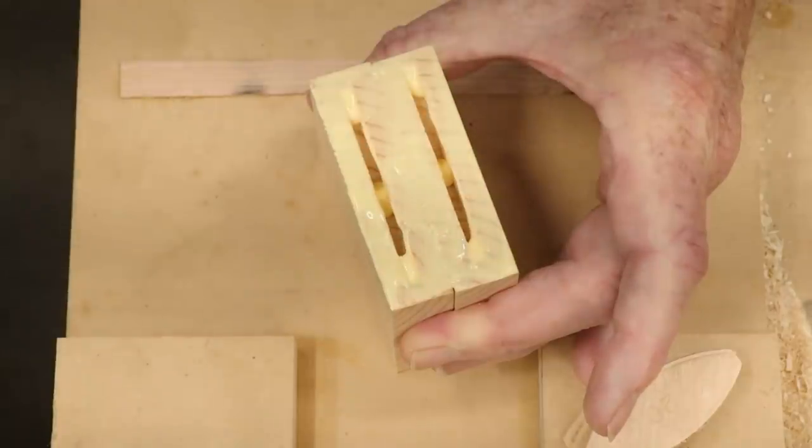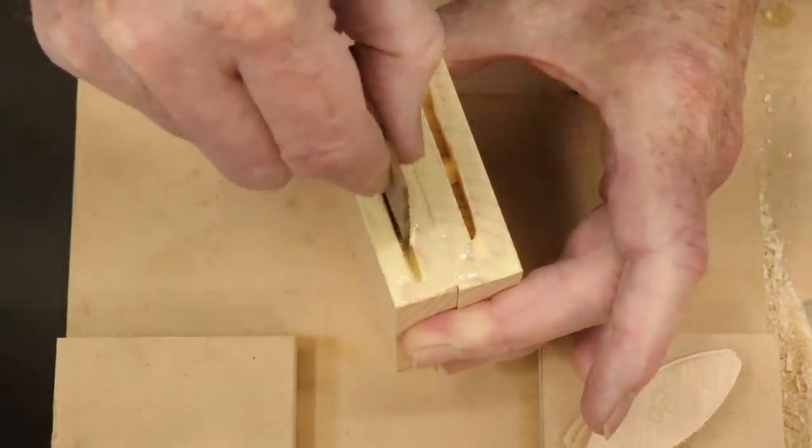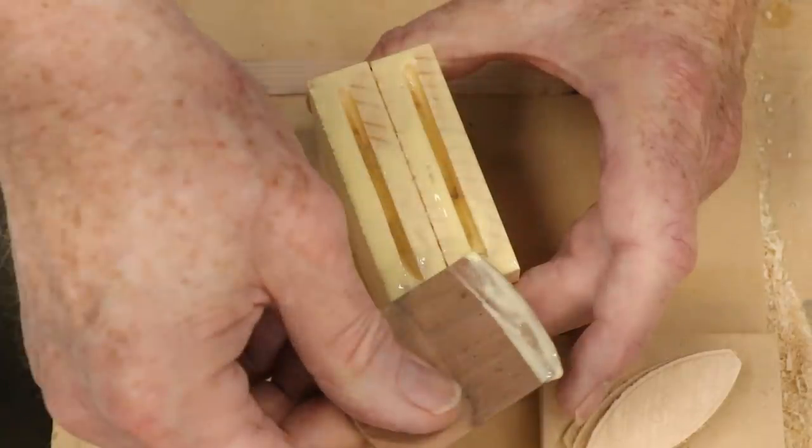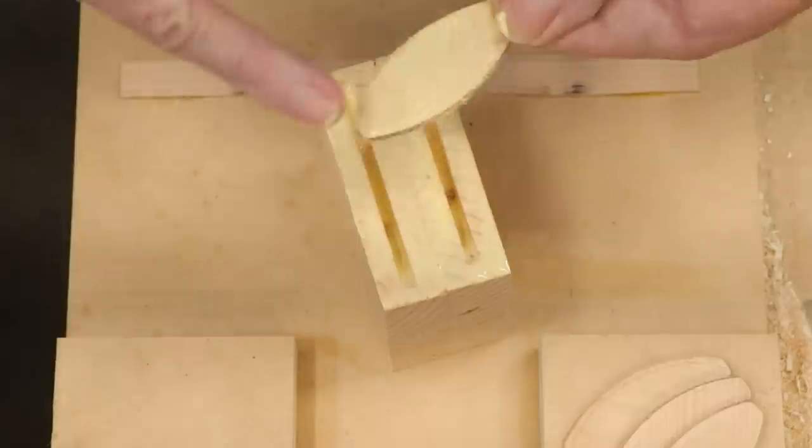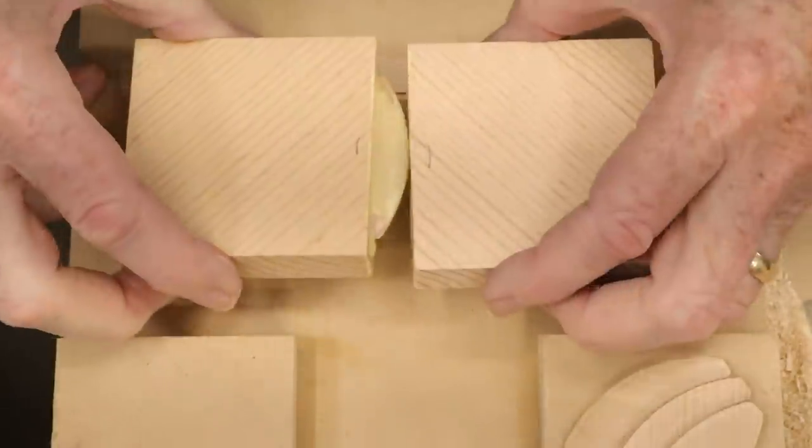I glued up samples in six species of wood: Pine, poplar, cherry, walnut, oak, and hard maple. I tried to apply the glue thoroughly to all surfaces. I let it cure for a week, and then I broke the samples in my press.